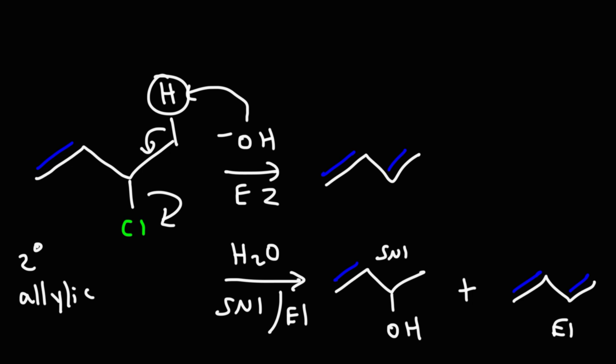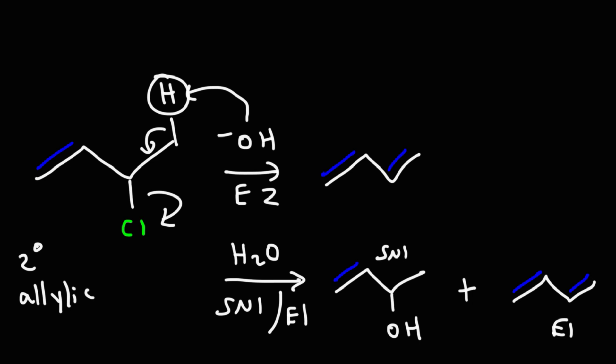So that's basically it for this video. To review: allylic and benzylic halides can work well for both SN1 and SN2 reactions. They can also work for E1 and E2 reactions depending on whether there's a proton available for abstraction and whether we get a conjugated alkene. The formation of a conjugated alkene or diene increases the likelihood of an elimination reaction.